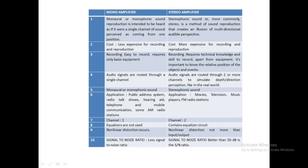Regarding cost, monophonic is less expensive for both recording and reproduction compared to stereophonic. The cost of stereophony is more expensive than monophony in terms of both recording and reproduction. In terms of description, a monophonic amplifier has one sound source, one amplifier, one direction, and one loudspeaker.